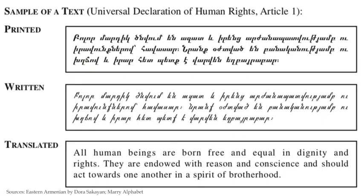Here's a sample text from the Universal Declaration of Human Rights, Article 1. Here's the English version: All human beings are born free and equal in dignity and rights. They are endowed with reason and conscience and should act towards one another in a spirit of brotherhood.